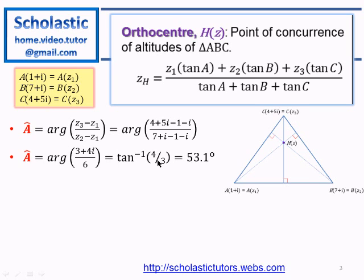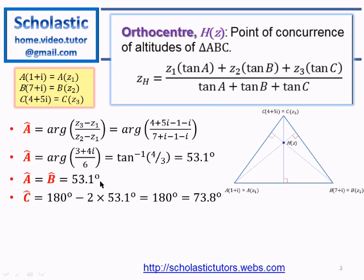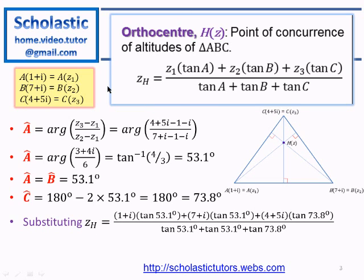As this triangle is a nice little triangle, angle A and angle B are the same, so both are 53.1 degrees, and the remaining angle, angle C, is 73.8 degrees. Now we plug in these values in z_H. z_H equals z₁ which is 1+i times tan A, plus z₂ which is 7+i times tan B, plus z₃ which is 4+5i times tan C, divided by tan A plus tan B plus tan C. After simplification we get z_H equal to 4 + 3.25i.